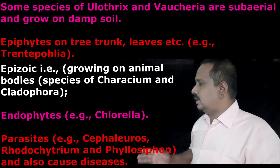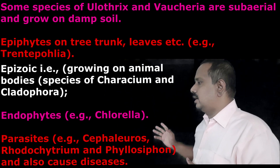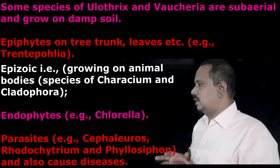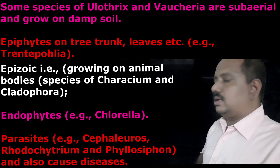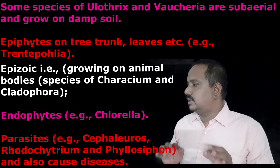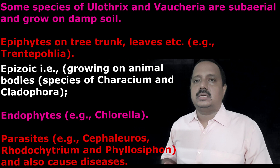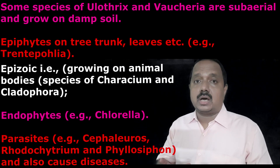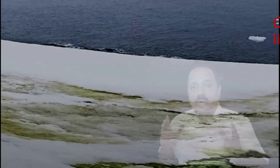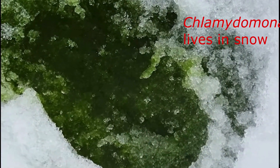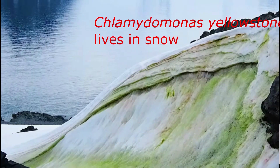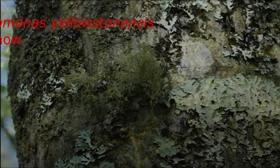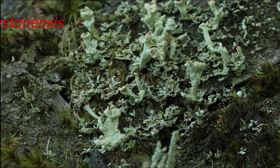Chaetophorales and Cladophorales live both in marine and freshwater environments. Some species of Ulothrix and Vaucheria are sub-aerial and grow in damp soil. Some members are terrestrial and grow as epiphytes on tree trunks, leaves, etc. One of the most interesting Chlorophyceae members is Cephaleuros, which is a parasitic alga living parasitically on the leaves of the tea plant, causing disease in the organism. There are also some forms living in hot springs — for example, some species of Chlorella and Chlamydomonas — and some species living in saline water. There are also symbiotic forms which live in association with fungi in lichens.